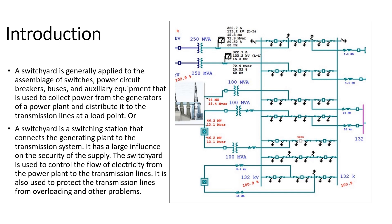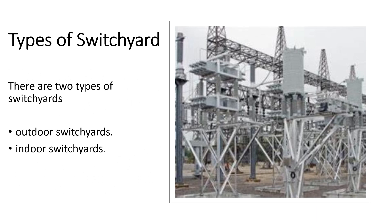It has a large influence on the security of the supply. The switchyard is used to control the flow of electricity from the power plant to the transmission lines. It is also used to protect the transmission lines from overloading and other problems.